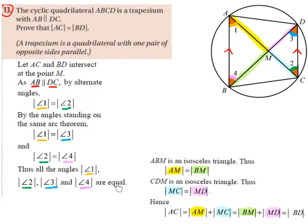Thus, all the angles — angle 1, angle 2, angle 3, and angle 4 — are equal, because we've proven that angle 1 equals angle 2, angle 1 equals angle 3, and angle 2 equals angle 4, so they are all equal to each other.